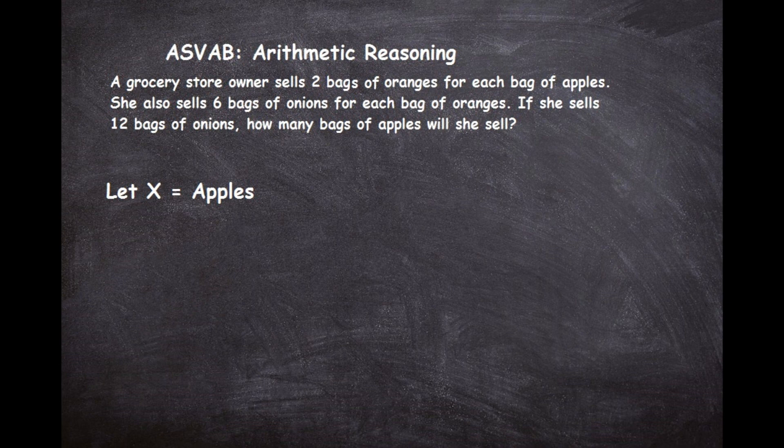If x equals the number of apples, let's figure out what the oranges would be. If we sell two bags of oranges for each bag of apples and we sell x apples, we are going to sell 2x oranges. For example, if we sold one bag of apples — so x equals one — then oranges equals two times one, which is two.